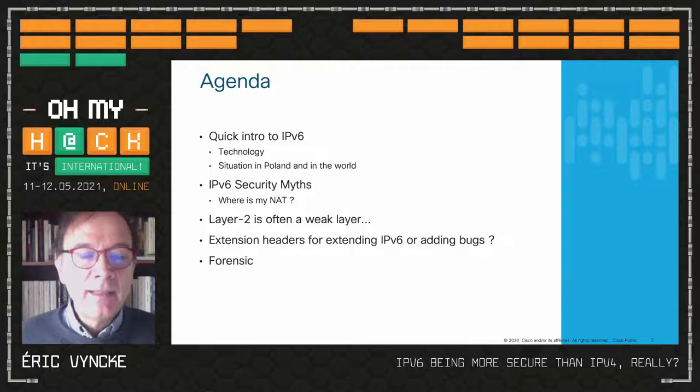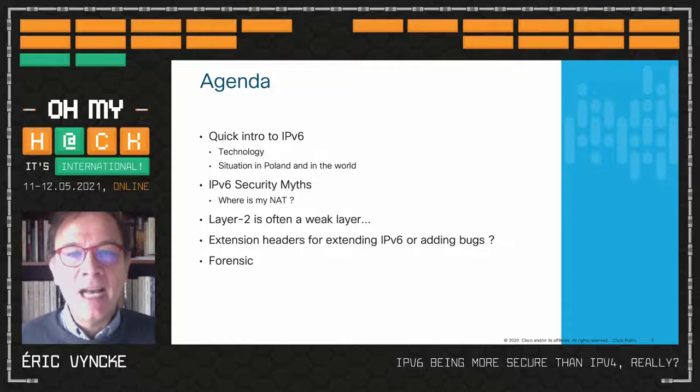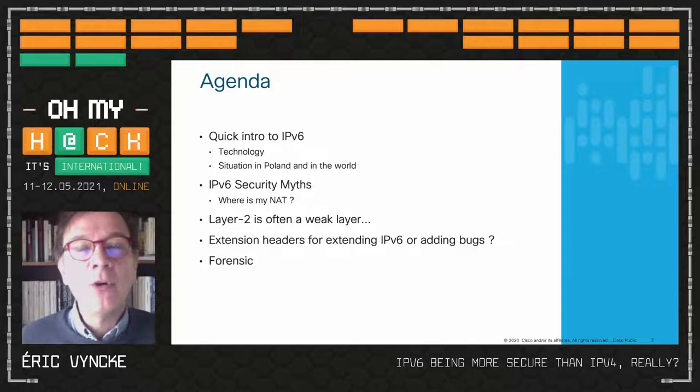Something pretty cool in IPv6 is called extension headers — the name was of course to extend IPv6 features. But as security practitioners we know that extensibility means more bugs, and indeed there were. Time permitting, a few words about forensics that are not identical in IPv4 and IPv6.